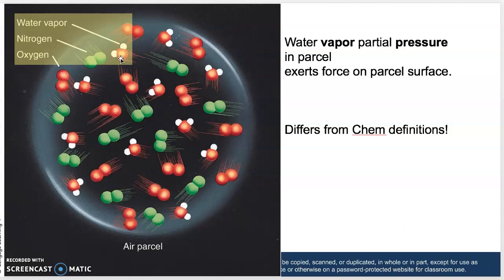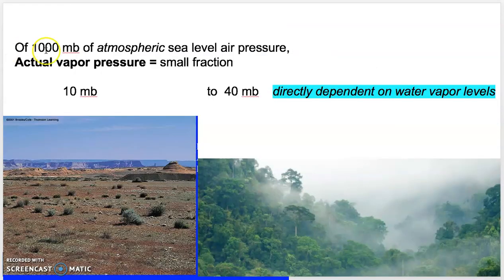There are also argon and carbon dioxide partial pressures — a lot of partial pressures inside an entire atmospheric air mass. We are particularly talking about water vapor partial pressure, which in a desert can be very low, around 1% of total atmospheric sea level pressure, and in a rain forest it can be about 4%. This actual vapor pressure is directly dependent on water vapor levels in the air.